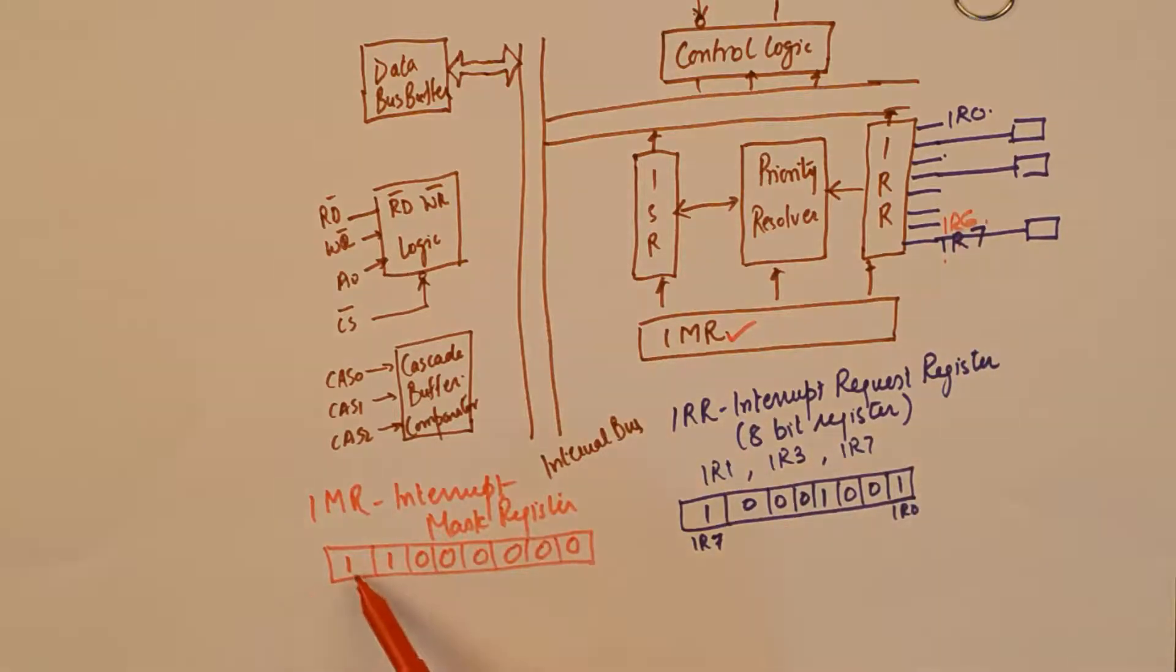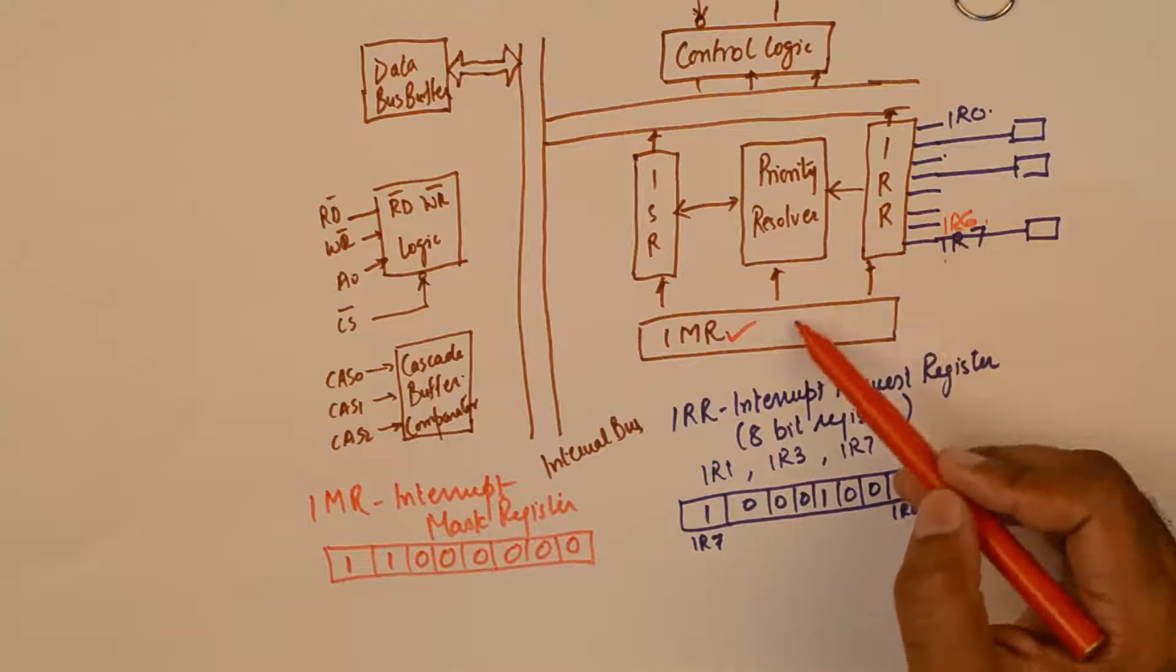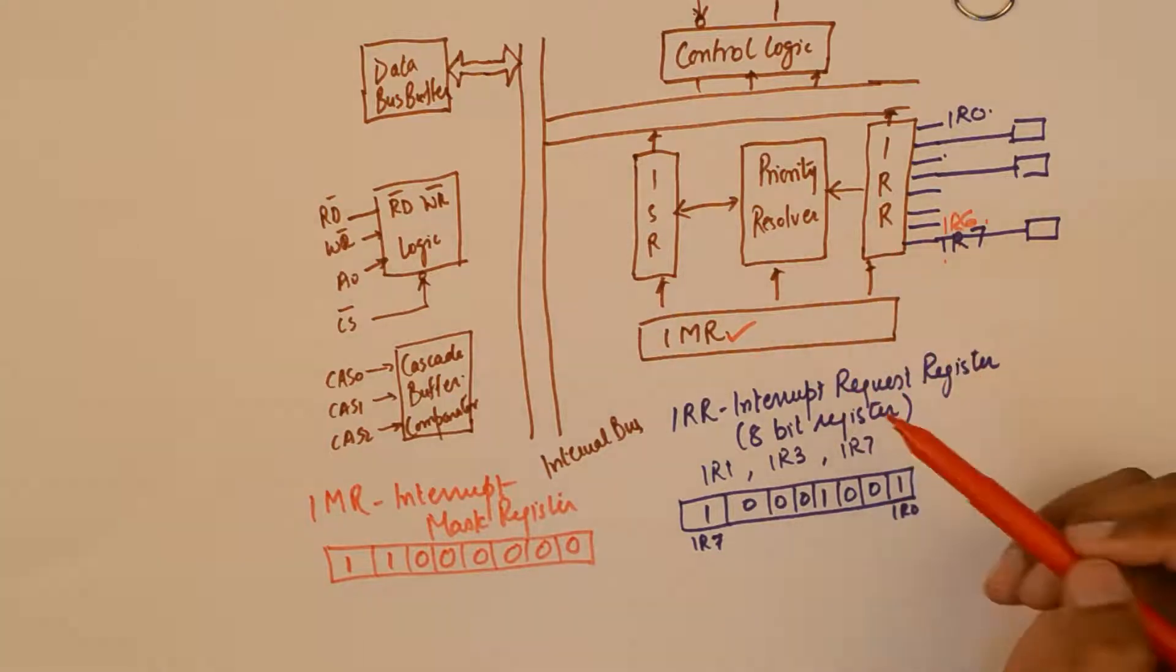So we do not wish to be interrupted by the peripheral devices connected at IR7 and IR6. So he has put a 1 1 here to mask the interrupts. A 0 would suggest that the interrupt is enabled. It is not masked.